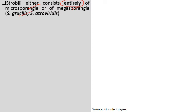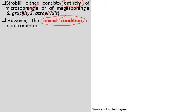Next comes the distribution of sporangia within the strobili, which varies from species to species. The strobili either consist entirely of microsporangia or of megasporangia — examples are Selaginella gracilis and Selaginella atroviridis. However, the mixed condition is more common, where strobili contain both microsporangia and megasporangia.